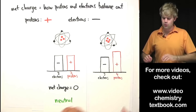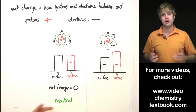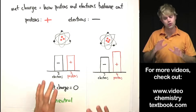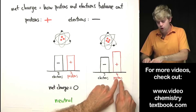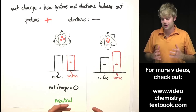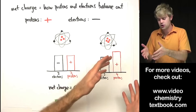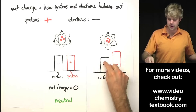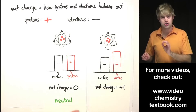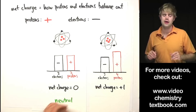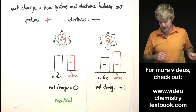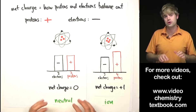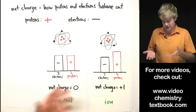What would happen in an atom where we have four protons and three electrons? We don't have the same number of electrons and protons, so they can't totally balance each other out. We have more protons than electrons, so we're going to have a net charge that's positive. In this case we have one more proton than electron, giving us a net charge of plus one. Since our atom has a net charge we give it a special name — we call it an ion. An ion is any atom that has a net charge.